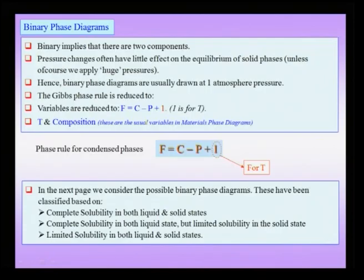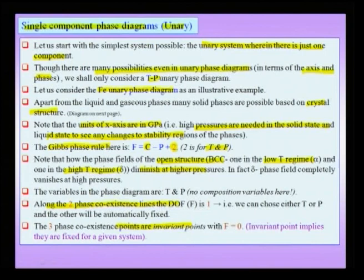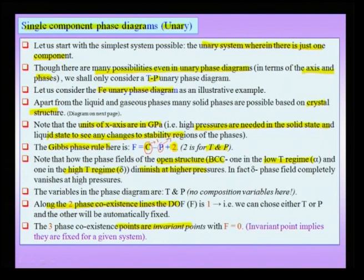To summarize what we have learned about the unary phase diagram of iron: in the unary phase diagram, the Gibbs phase rule must be kept in its extended form, F equals C minus P plus 2, and with one component we substitute C equals 1. The maximum number of phases that can coexist is 3, and when three phases coexist, the degrees of freedom is 1 minus 3 plus 2 equals 0, making that point an invariant of the phase diagram.